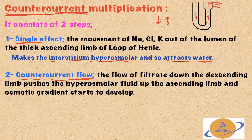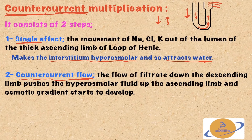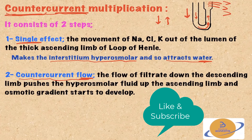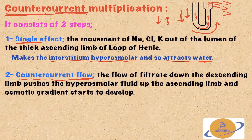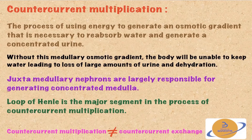Counter-current multiplication consists of two steps. The first step is called the single effect — the movement of sodium, chloride, and potassium out of the thick ascending limb of the loop of Henle — which is responsible for generating a hyperosmolar interstitium that will in turn attract water. The second step is called counter-current flow, which is basically the flow of filtrate from the descending limb that pushes filtrate back into the ascending limb, where sodium, potassium, and chloride then move out.